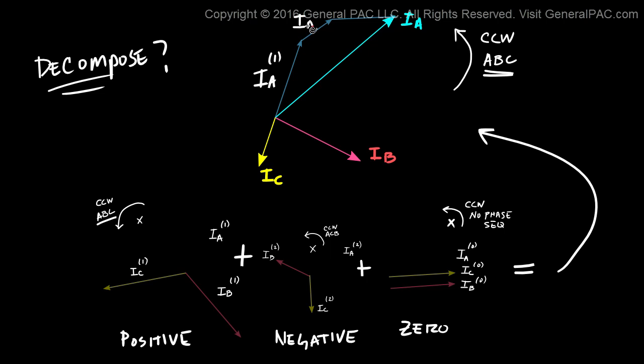So all we're doing is we're taking I_A positive sequence, we're adding that to I_A negative sequence, and we're adding I_A zero sequence. And we get our original phasor. You see that?